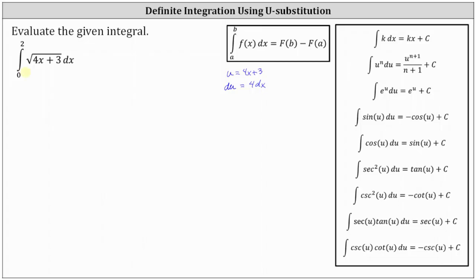We don't have 4dx in the integral, and therefore we'll solve for dx by dividing both sides by four. Simplifying, we have one-fourth du equals dx.